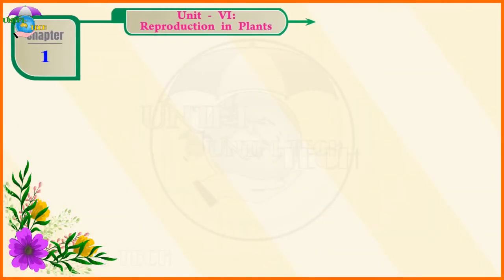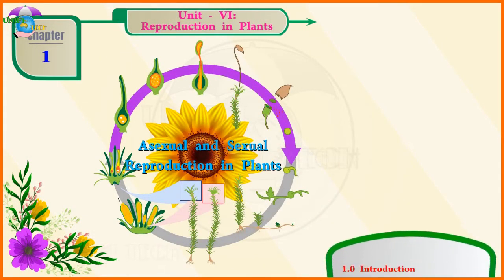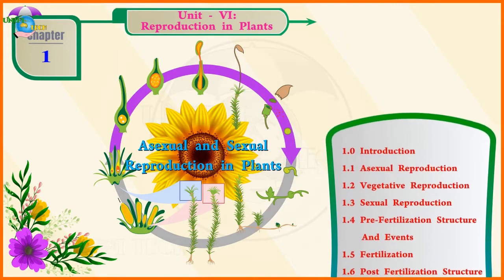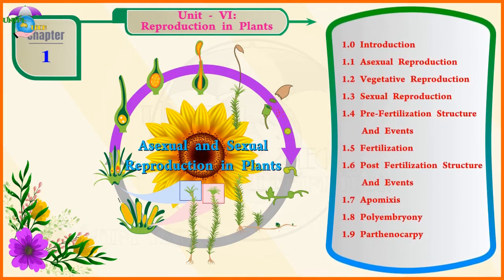Chapter 1, Unit 6: Reproduction in Plants — Asexual and Sexual Reproduction in Plants.